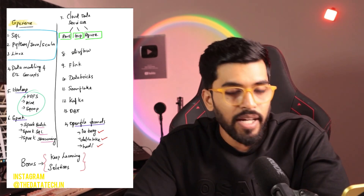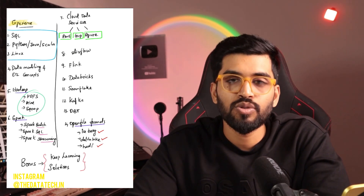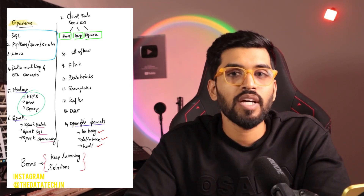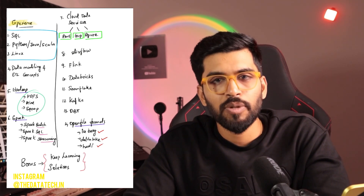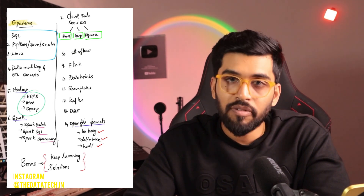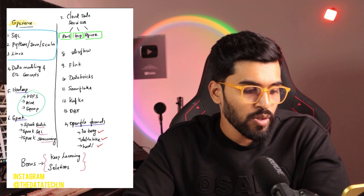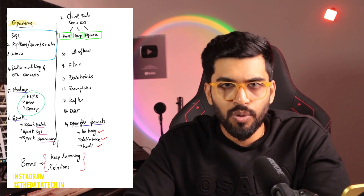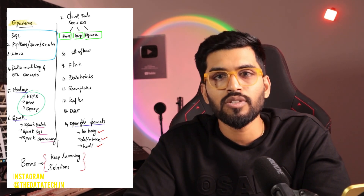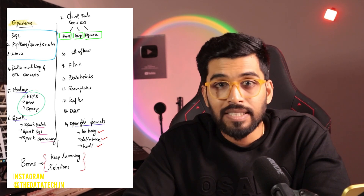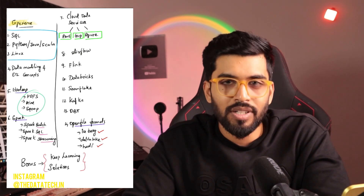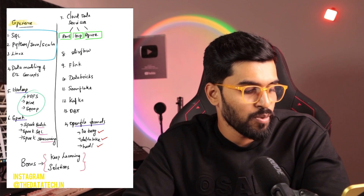Next is DBT — the data build tool. People have started doing POCs on it, and I've seen a lot of discussion about it in professional circles. And open file formats — Iceberg, Delta Lake, or Hudi. Pick any one that gives strong ACID support for your query engine. These formats have many other functionalities as well.